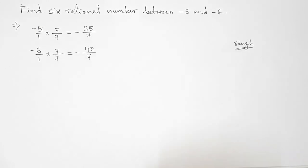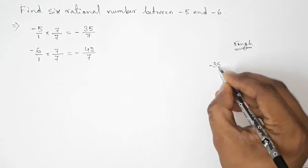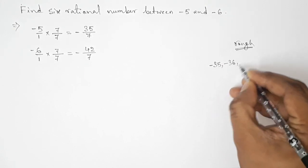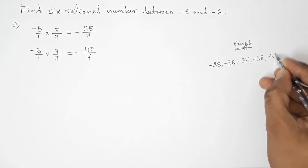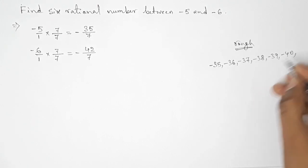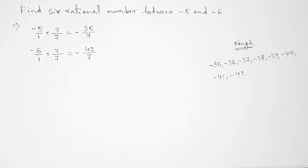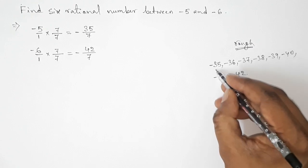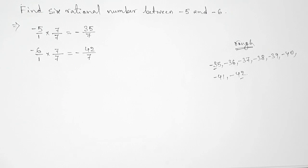So here both the denominators are same, so now between minus thirty-five to minus forty-two we can get six. So here we can get six negative integers. So between minus thirty-five to minus forty-two, these are six negative integers.